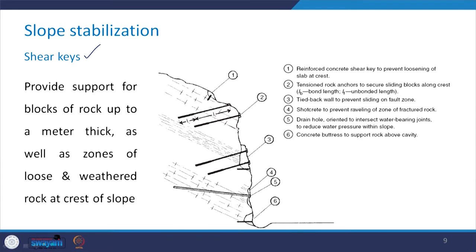The first type of reinforcement is the shear key. You can see here that this key has been plugged into the rock slope, where this portion was unstable. Basically, what the shear key does is it provides support for blocks of rock up to a meter thick, as well as zones of loose and weathered rock at the crest of the slope. You can see that here the shear key as a stabilization measure has been used at the crest.